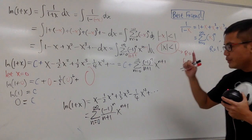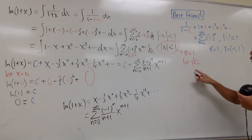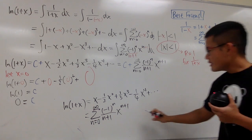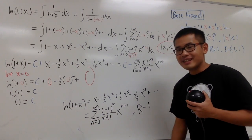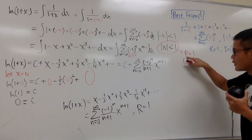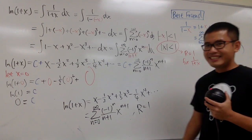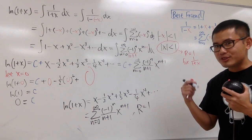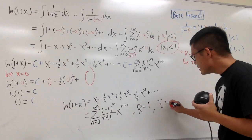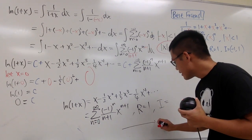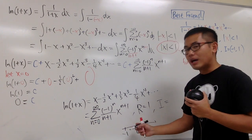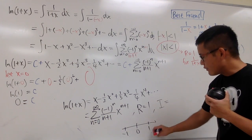Since we obtained this by integrating 1 over 1 plus x, the radius of convergence stays the same — r equals 1. Remember, when we integrate or differentiate a power series, the radius of convergence stays the same; only the endpoints may give trouble. The center is at 0, so going one unit left gives negative 1 and one unit right gives positive 1. We need to check convergence at these endpoints.